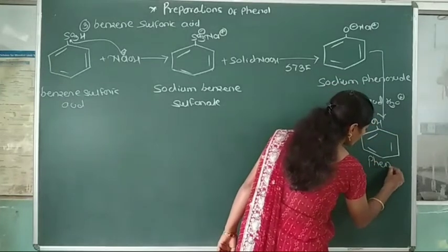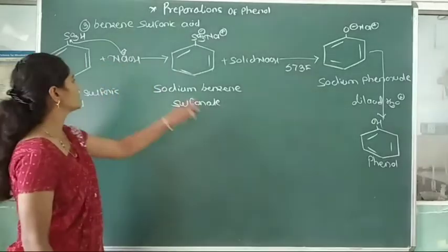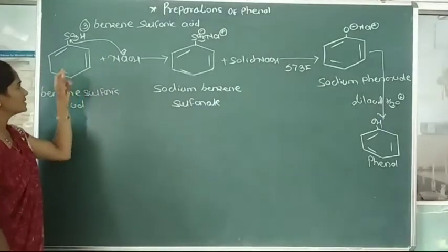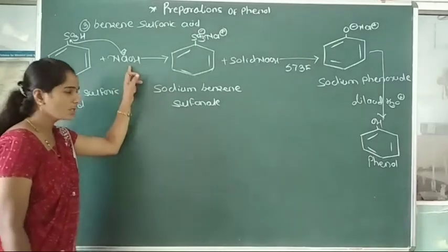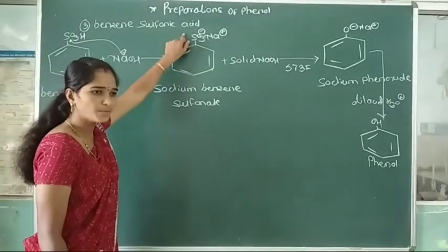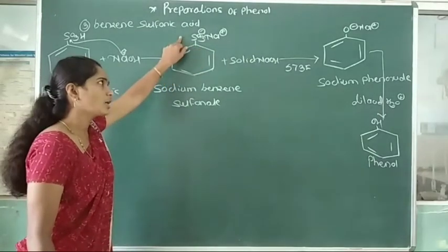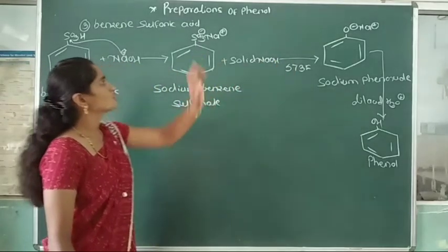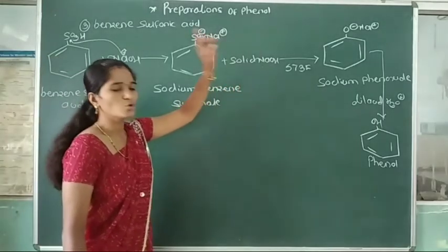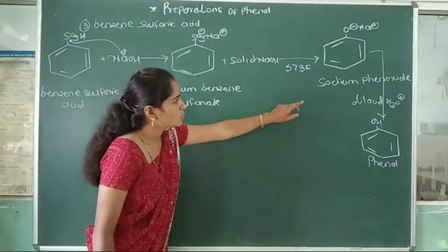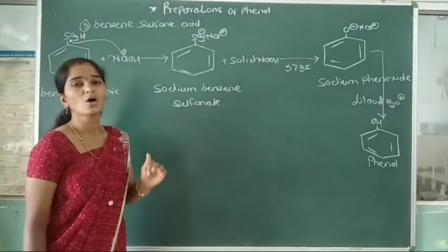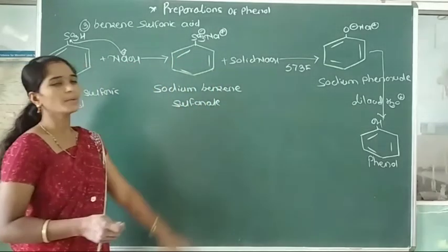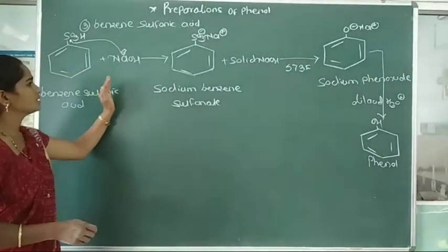In this reaction, phenol is prepared from benzene sulfonic acid. It requires two molecules of sodium hydroxide. First, benzene sulfonic acid is neutralized with NaOH to form sodium benzene sulfonate. This sodium benzene sulfonate again reacts with solid sodium hydroxide at 573 K to form sodium phenoxide, which then undergoes acid hydrolysis to form phenol. This is the third method.